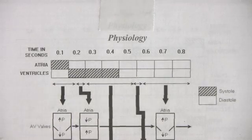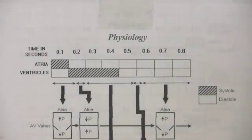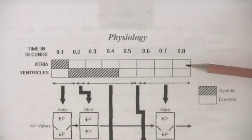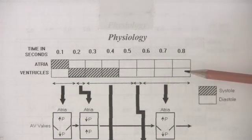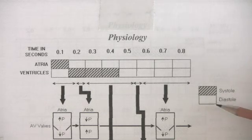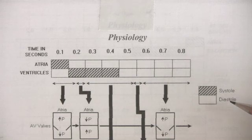The cardiac cycle is a heartbeat, and it lasts approximately eight-tenths of a second. The upper part of this graph represents events in the atria, and the lower part events in the ventricles. If the block is shaded, this is systole, and if it's clear, it's diastole. Systole is contraction, and diastole is relaxation.